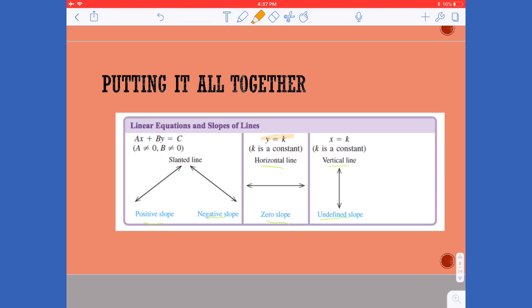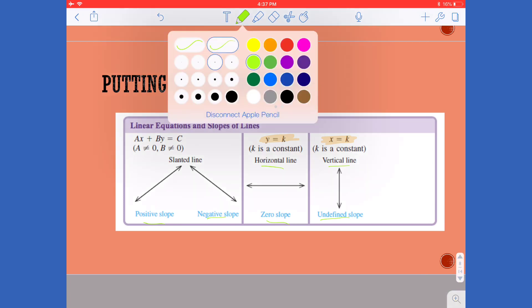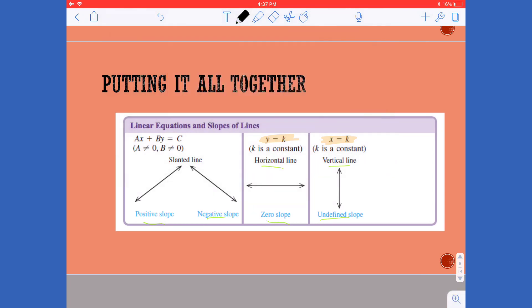Two things that I didn't talk about that I want to make sure you feel comfortable with are the way we write equations for vertical and horizontal lines. You'll notice that for my horizontal line I have y equals k where k is just a constant. I'm actually going to write this a little differently for you.